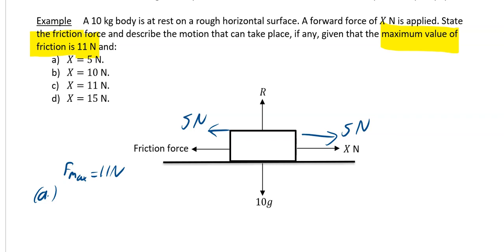So friction in this case just has to act at 5 newtons to prevent any motion taking place. Remember, friction is a lazy force, so it does as little as it can to prevent motion. So in part A, if X is equal to 5 newtons, then F is also equal to 5 newtons.